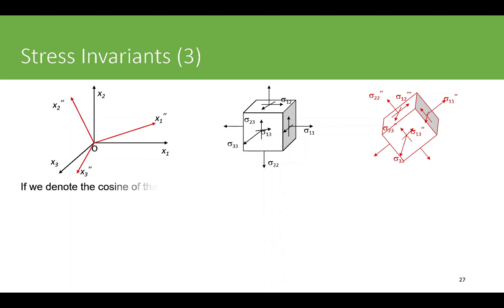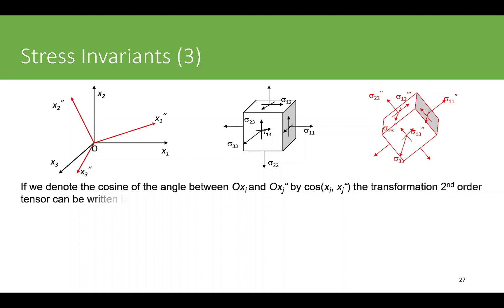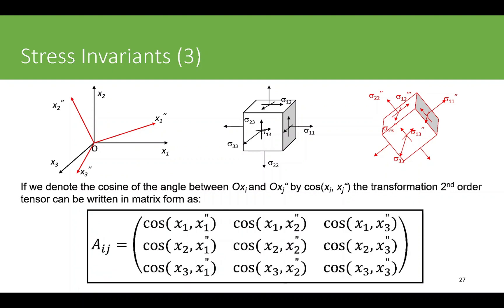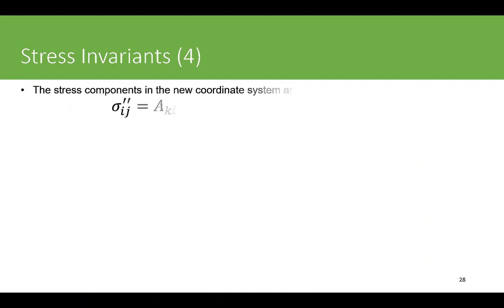We use a transformation matrix that converts one coordinate system into another based on direction cosines. We find the angles between individual axes, compute the direction cosines, and obtain the rotation or transformation tensor — which is also a second-order tensor. To find the updated stress values in the new coordinate system, we multiply the actual stress tensor in the original Cartesian coordinate system by these transformation matrices, giving the updated stress tensor in the new coordinate system.